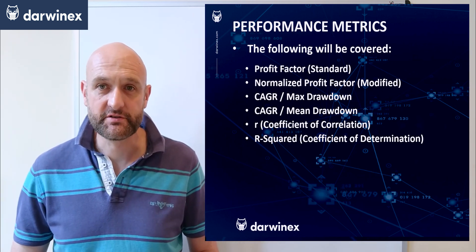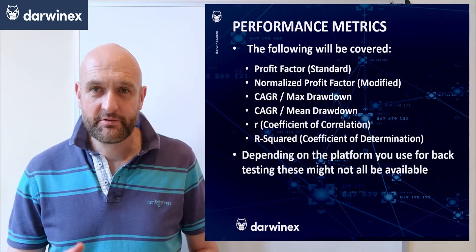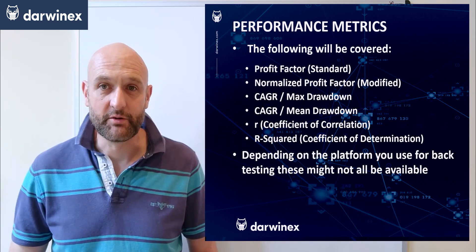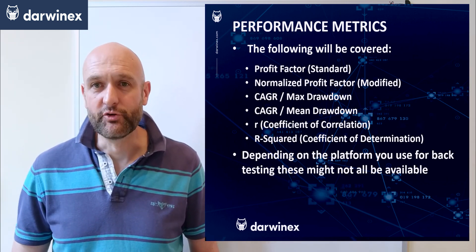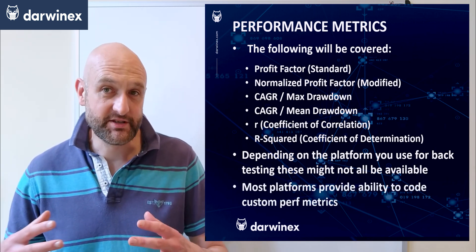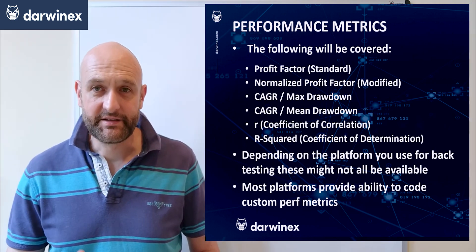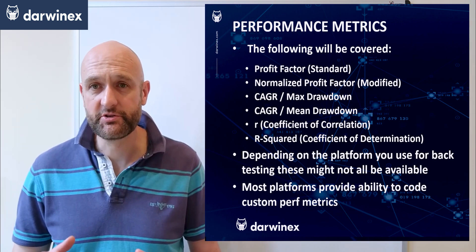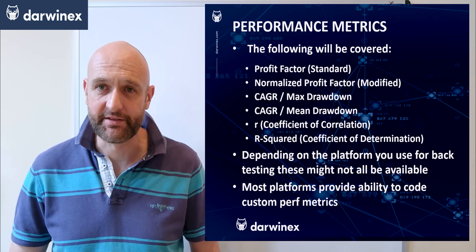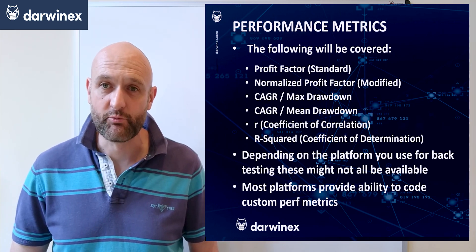Finally, we'll move on to two performance metrics based around linear regression modelling. The first one is the coefficient of correlation and the second one is the coefficient of determination. Now, depending on the backtesting software that you use, all of these metrics might not be available. But most platforms do allow you to code your own performance metrics, so if there are gaps and you want to try them out, you'll need to code those yourself. If you're a MetaTrader user, make sure you check out the tutorial on advanced MQL coding techniques — in episode two I actually look at how to code a performance metric in one of your EAs.